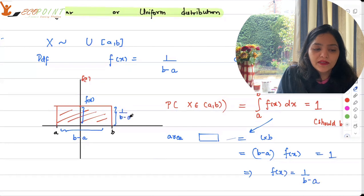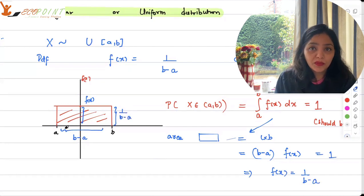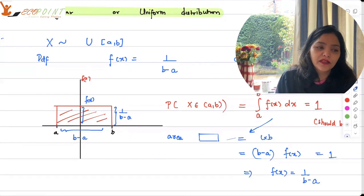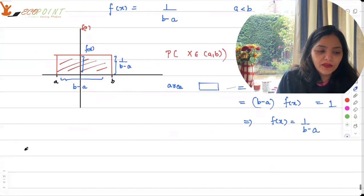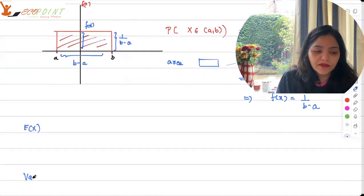Once you know that the interval is a, b and this length is b minus a, the height has to be 1 upon b minus a in order for this area to be equal to 1. The reason why this is called a rectangular distribution is exactly this because this is the rectangle that will get generated, okay? Now what is the expected value of this random variable and what is the variance for this random variable? Let's figure that out.